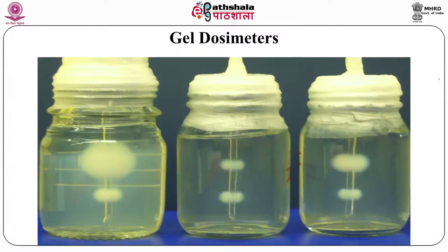Until now we were discussing point dosimeters or 2D dosimeters. A new class of dosimeters under active research are gel dosimeters, which can be used for mapping three-dimensional doses because the dose information is trapped in three dimensions within the gel. If you can read this information — for example, ferrous being converted into ferric in a gel matrix — using imaging methodology like MRI or CT to measure ferric concentration, you can map the dose in three dimensions.